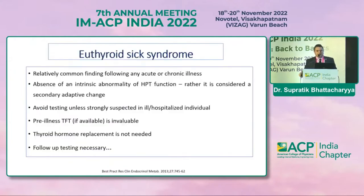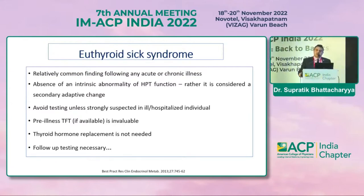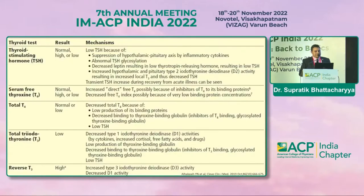Euthyroid sick syndrome is a relatively common finding following any acute or chronic illness. There is an absence of intrinsic abnormality of the hypothalamo-pituitary-thyroid function; rather, it is considered a secondary adaptive change. Avoid testing unless strongly suspected. Pre-illness TFT is very vital and invaluable for comparison. Thyroid hormone replacement is not needed. Follow-up testing is necessary after recovery.